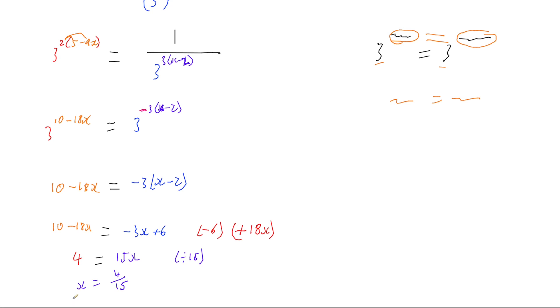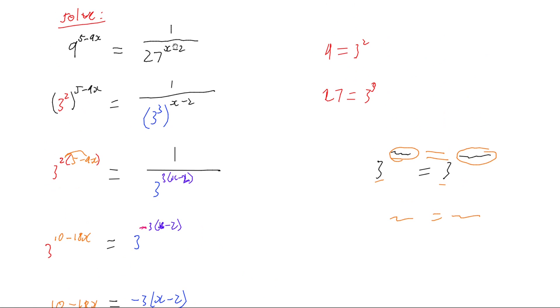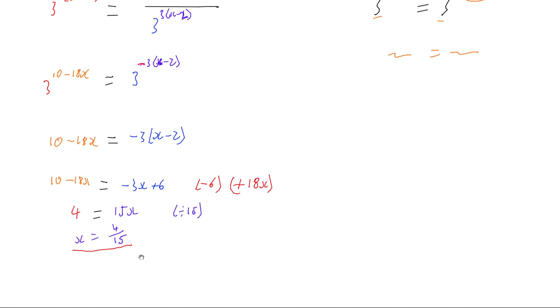So there we go. To solve this problem here where we've got indices and one of them is a fraction, all we need to do is get our bases to be the same so that way we can equate our powers. But in this case that meant we needed to use our negative power law for indices to get it to be not in the fraction anymore. And then we just end up with a linear equation which we can then solve.